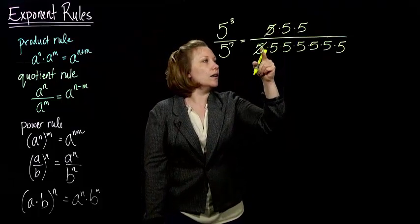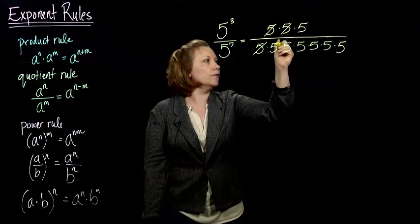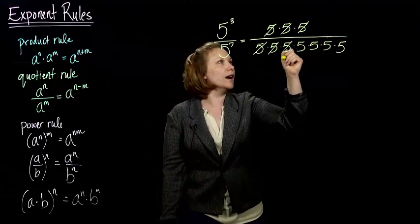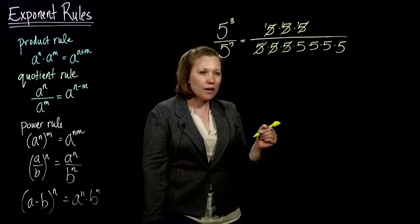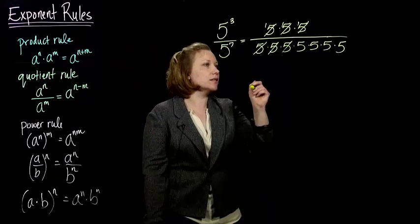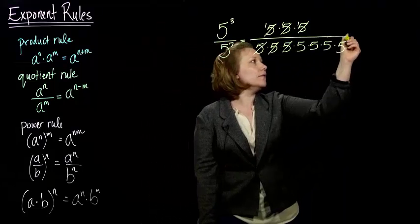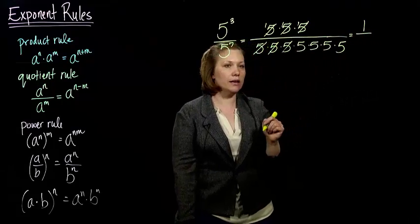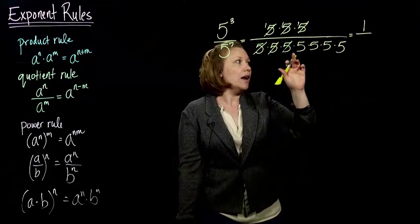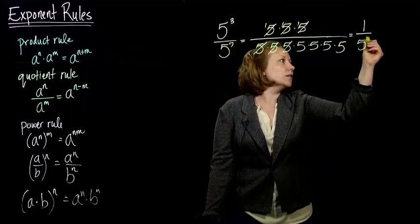So I've got 5 over 5 makes 1 and 5 over 5 makes 1 and 5 over 5 makes 1. And sometimes we forget there's a secret 1's up here when we do this canceling.